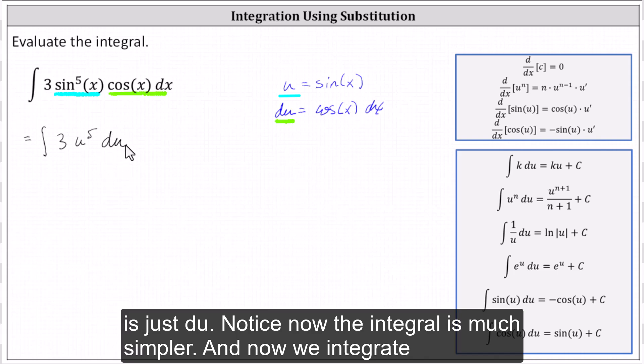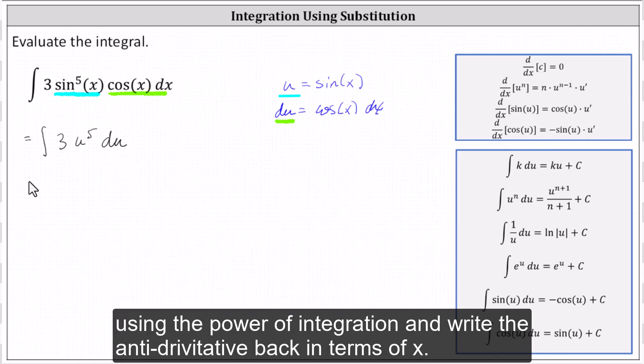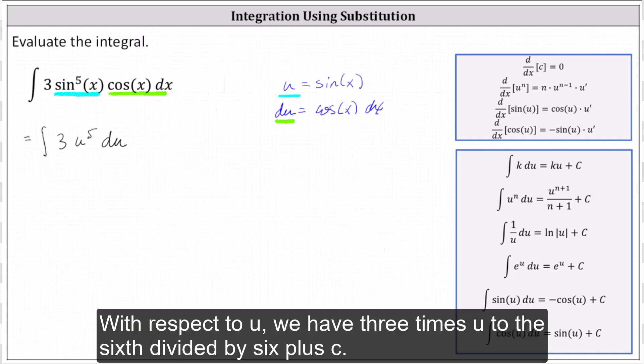Notice now the integral is much simpler. And now we integrate using the power rule of integration and write the antiderivative back in terms of x. With respect to u, we have three times u to the sixth divided by six plus c.